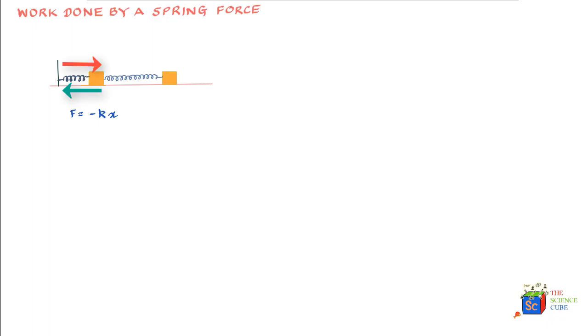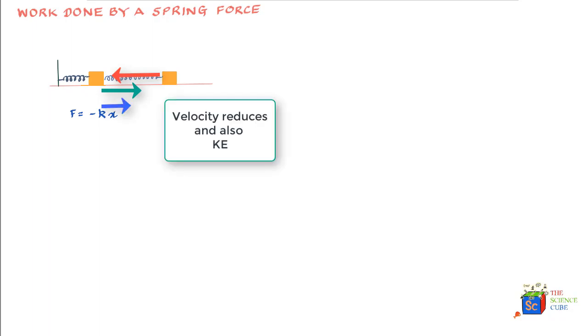When you are pulling the box to the right, the spring is pulling the mass to the left, and therefore the spring force is doing negative work on the mass. When you start pulling from left to right the velocity would tend to reduce, because the force acting in the left direction keeps increasing, so the kinetic energy of the mass keeps reducing. That's another way of saying the spring is doing negative work on the mass, or taking out energy from the mass.